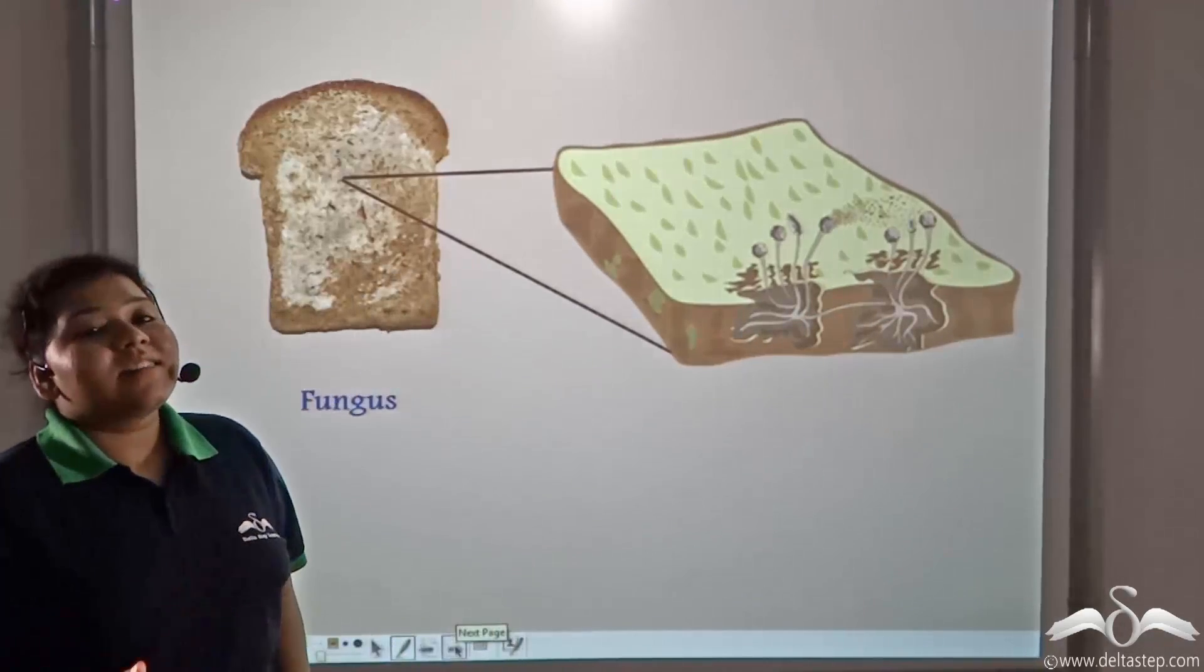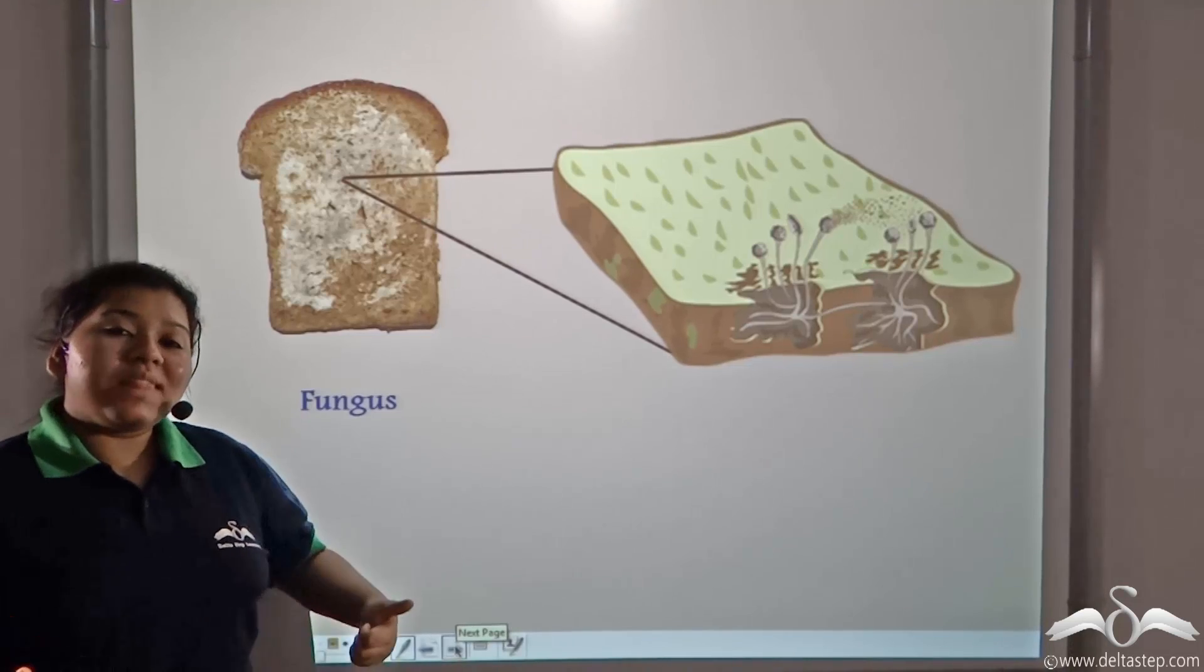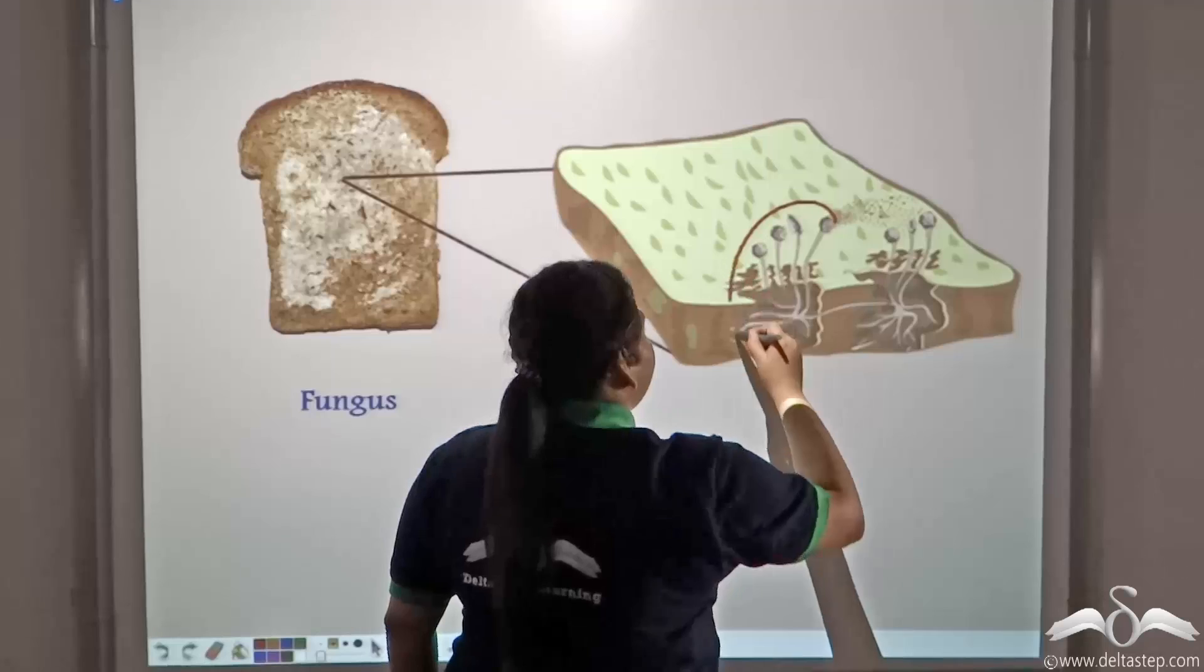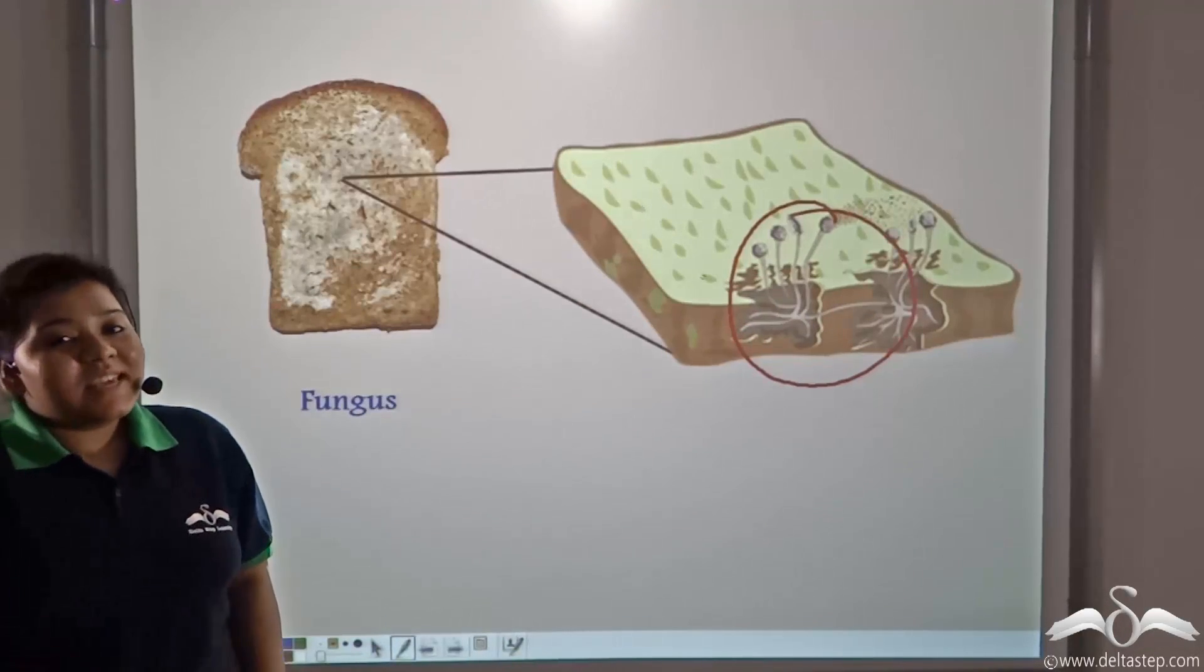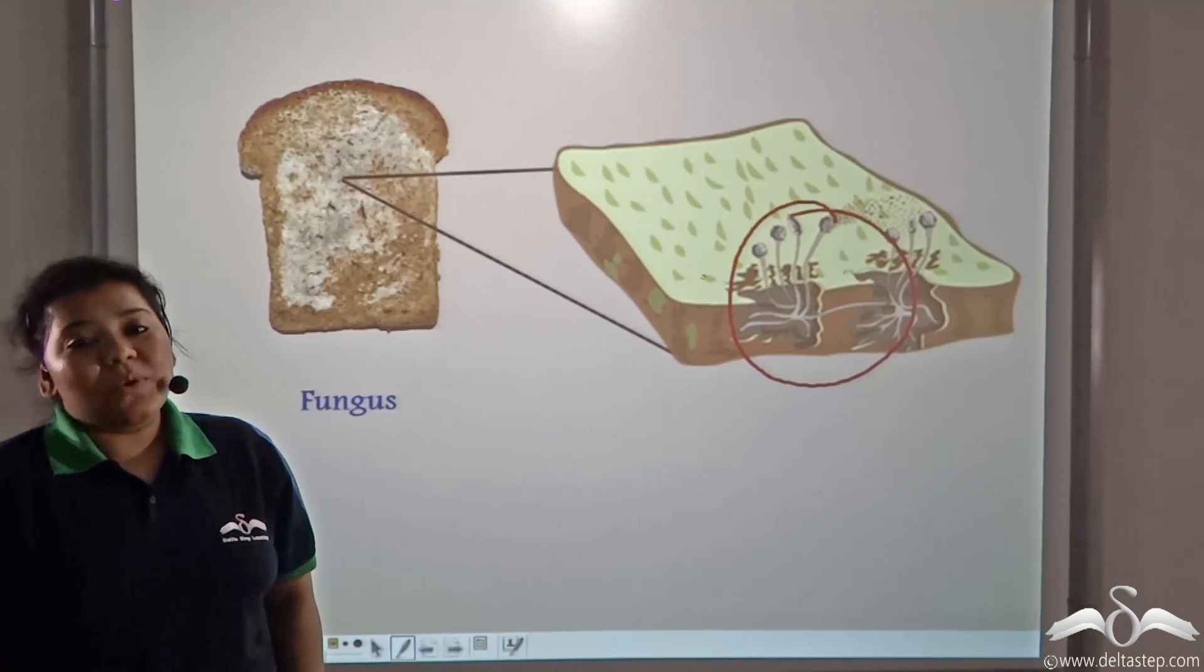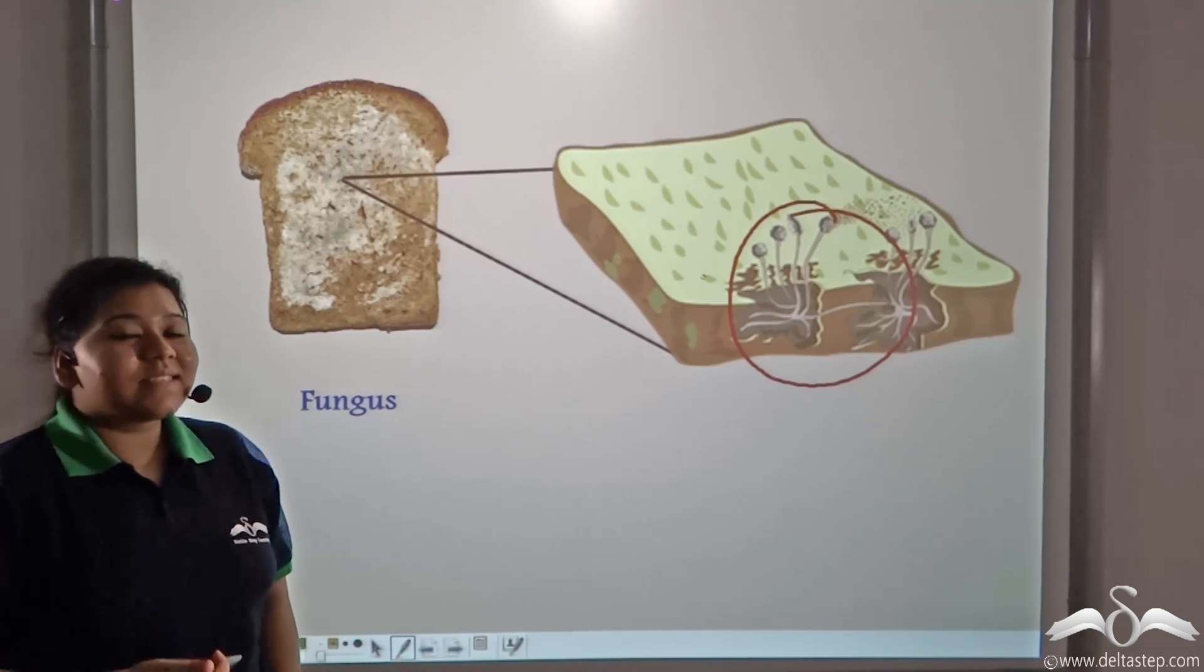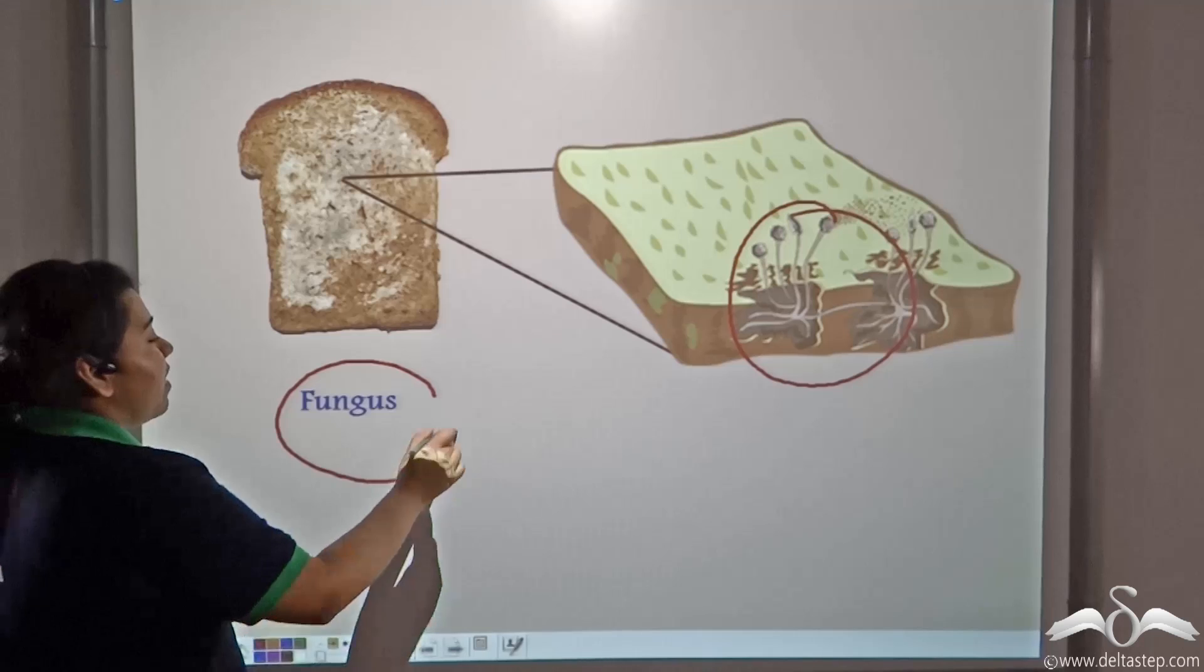So, even these are classified under microorganisms because only under the microscope you will be able to see the entire structure of these organisms. These organisms, unlike algae, do not contain the green pigment and so cannot manufacture their own food. This class of living organism is known as fungus.